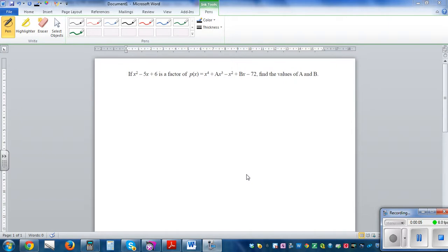If x squared minus 5x plus 6 is a factor of the polynomial p(x) equals x to the power 4 plus ax cubed minus x squared plus bx minus 72, find the values of a and b.